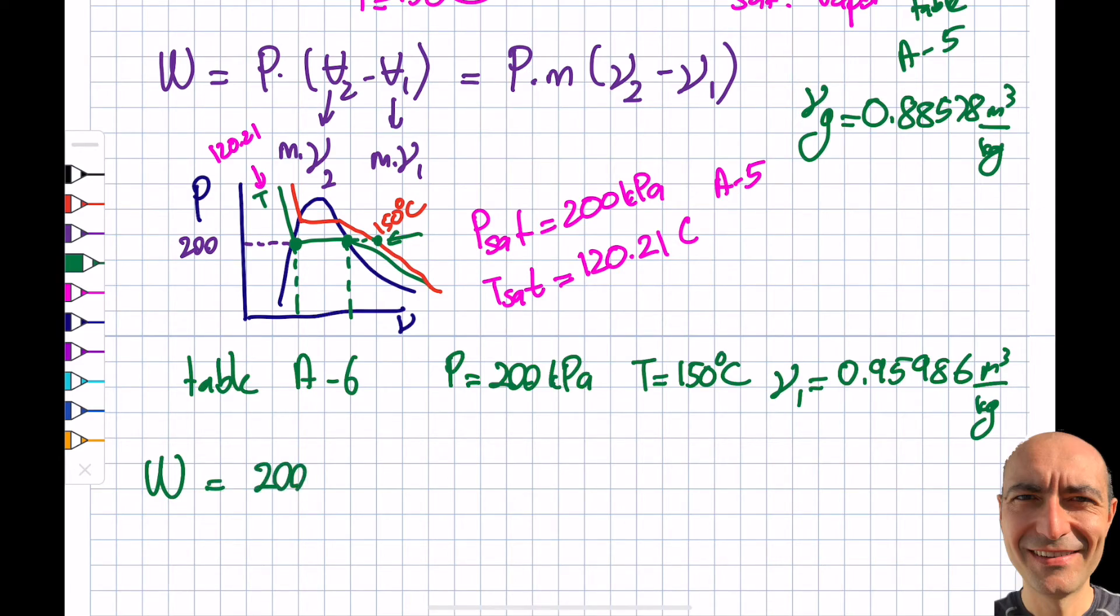That's good, and I simply write this back in. P is 200,000 - I'm going to write it in terms of joules. If you prefer, you can write 200 and get kilojoules. The mass is 0.5 kilograms, and this is Pascals, which is newton per meter squared, times the specific volume 2, which I'm simply copying - 0.88578 minus 0.95986, and the unit is going to be m³/kg.